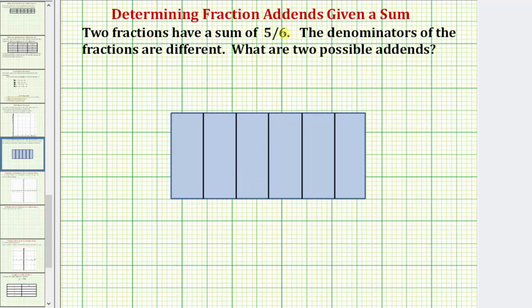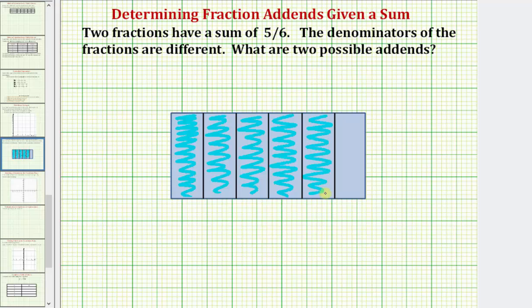Because the denominator is six, and because the numerator is five, to model five-sixths we would shade five of the six pieces. So there's one-sixth, two-sixths, three-sixths, four-sixths, and five-sixths.